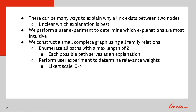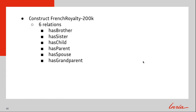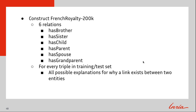With this complete graph constructed, we perform a user experiment and let users determine the relevance weight for each explanation. Explanations are graded on a Likert scale from 0 to 4, where 0 is the least intuitive and 4 is the most intuitive. In this work, we construct a dataset called French Royalty 200K, focusing on six relations: has brother, has sister, has child, has parent, has spouse, and has grandparent. Included with every triple in the training and test set are all possible explanations for why a link could exist between the two entities.